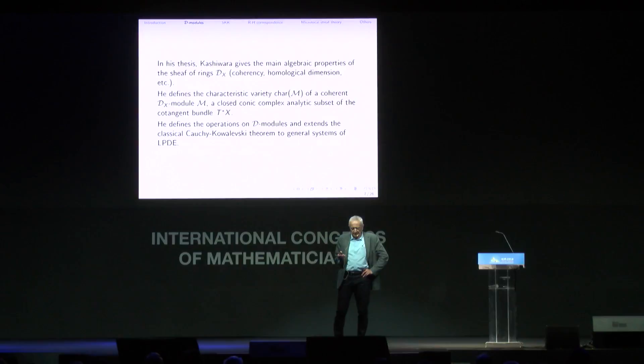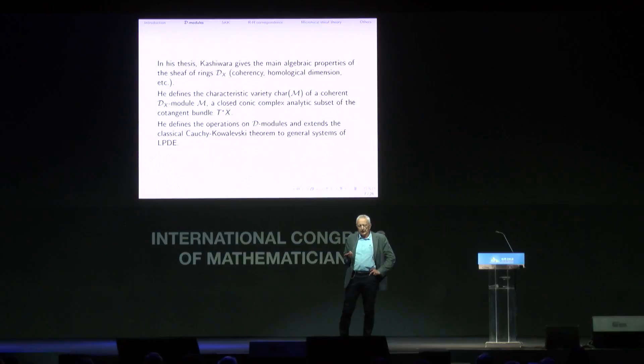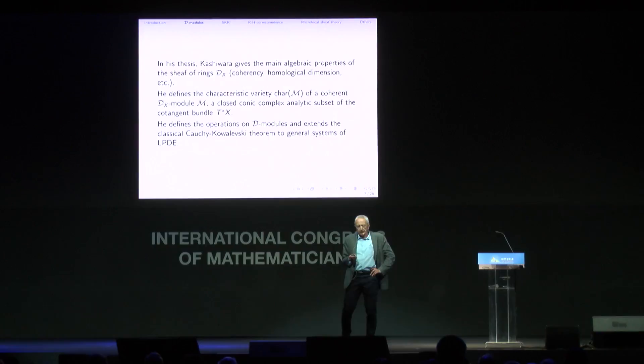Locally, a D-module is the cokernel of a matrix of differential operators — a module of locally finite presentation, though the matrix is not unique. In his thesis, Kashiwara gives the main algebraic properties of the sheaf of rings D_X: he proves it is coherent, calculates the homological dimension, and defines the characteristic variety Char(M) of a coherent D-module, which replaces the characteristic variety of a single differential operator. This characteristic variety is a closed, conic, complex analytic subset of the cotangent bundle T*X.